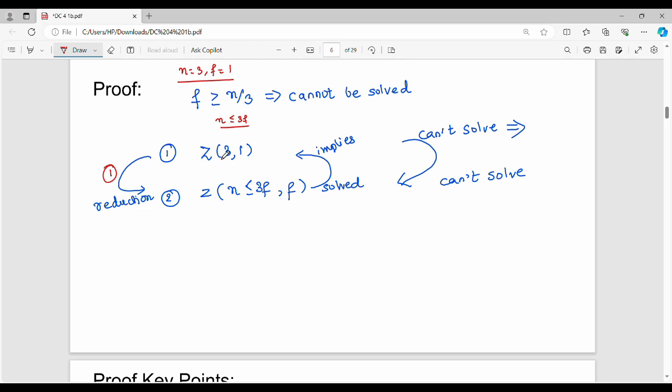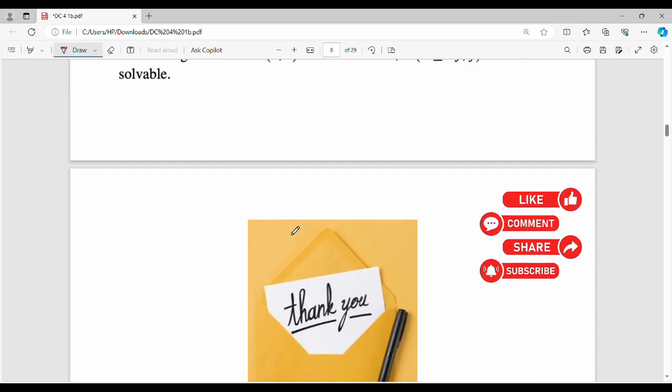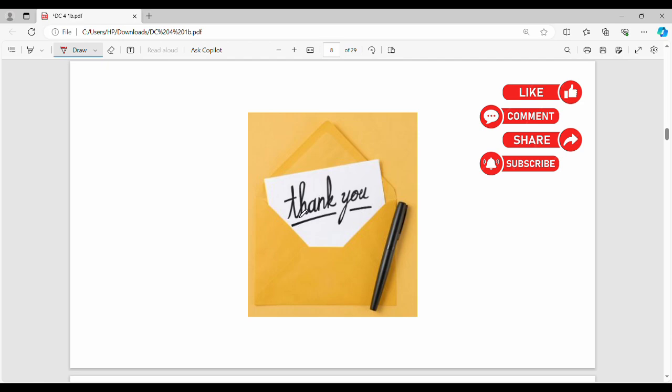Then point number 3: if n is less than or equal to 3f, the problem also cannot be solved. Hence proved, this is the problem statement. These are the key points. You can review the paragraph and go through the detailed proof if needed. This is the formula, and you can see the mathematical notation. That's all for this video. Thanks, bye.